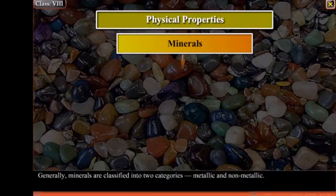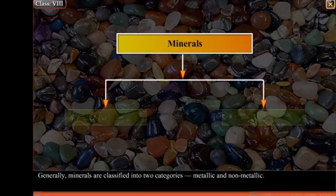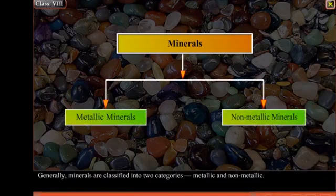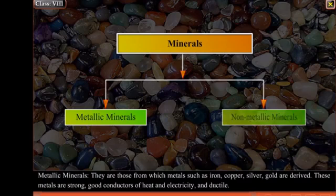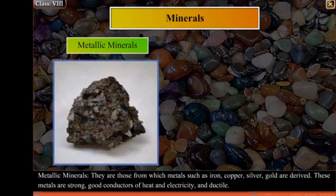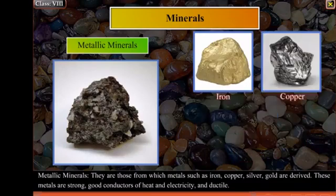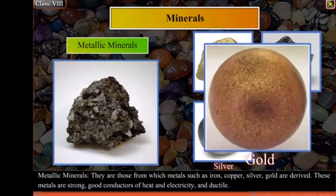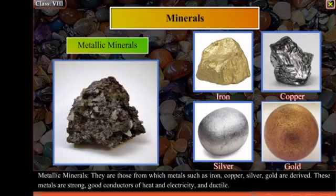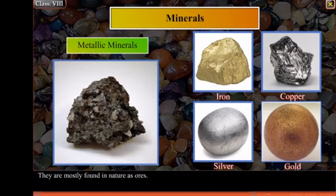Generally, minerals are classified into two categories: metallic and non-metallic. Metallic minerals are those from which metals such as iron, copper, silver, and gold are derived. These metals are strong, good conductors of heat and electricity, and ductile. They are mostly found in nature as ores.